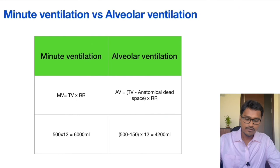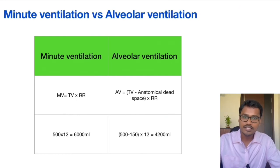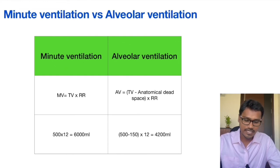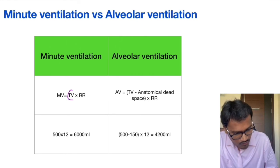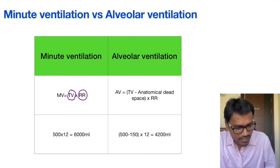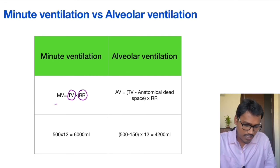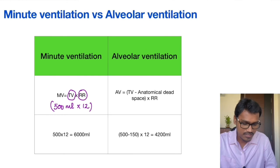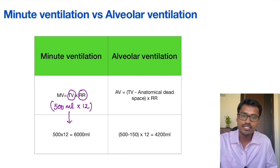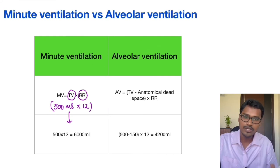Now let's see what is minute ventilation and alveolar ventilation. Minute ventilation is simply how much air can be taken in by the lung during quiet breathing. Minute ventilation is tidal volume multiplied by respiratory rate. Normal tidal volume is 500 ml and normal respiratory rate in an adult is around 12, so the value becomes 6000 ml. This is the amount of air going into and out of the lung each minute.